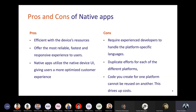The cons of native development are that you have to maintain two different source codes — one for Android and one for iOS — which duplicates effort. You also need experienced developers who know platform-specific languages: Java or Kotlin for Android, Swift or Objective-C for iOS.